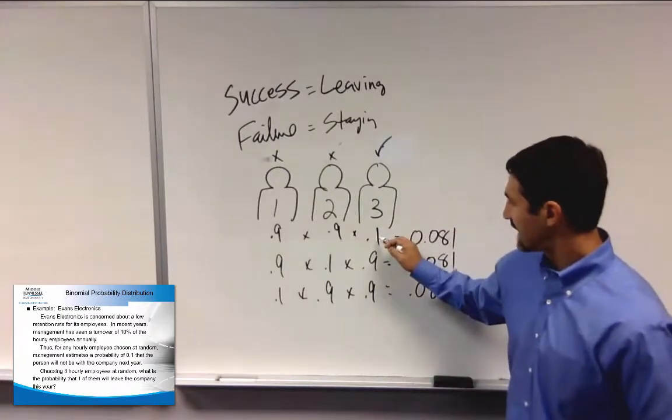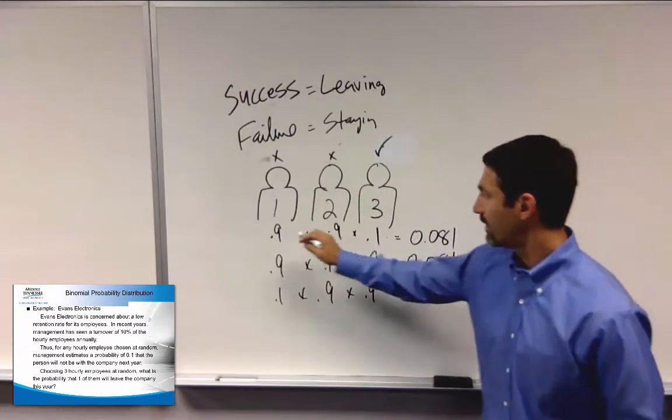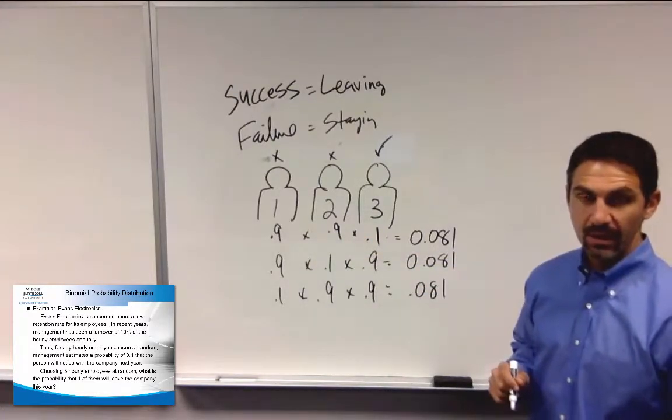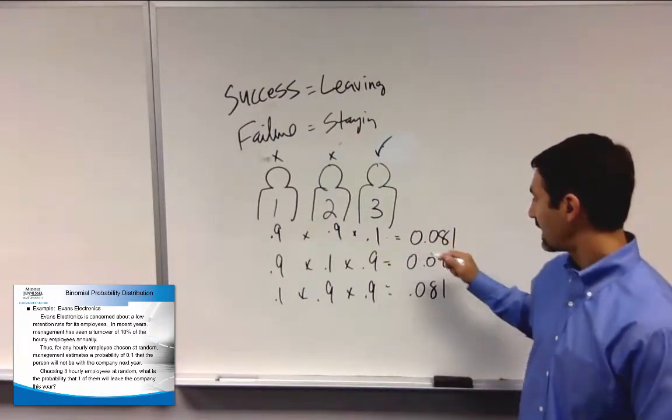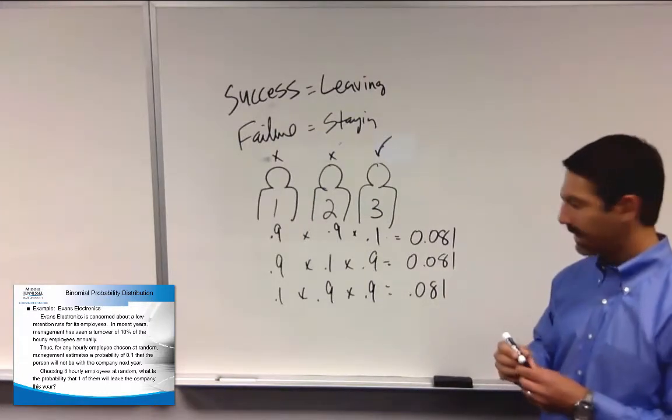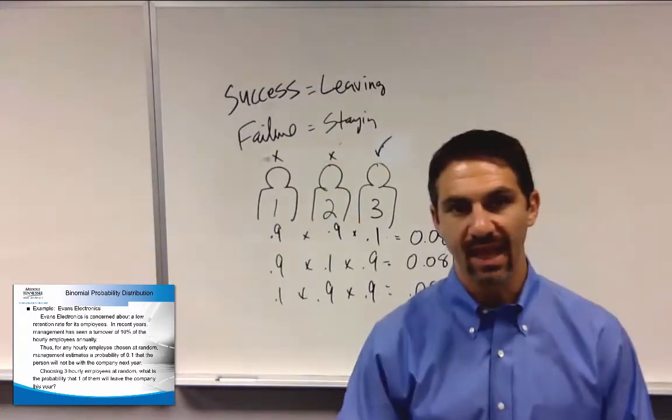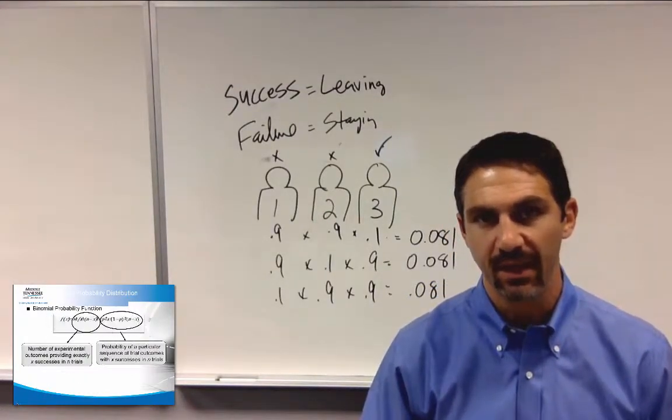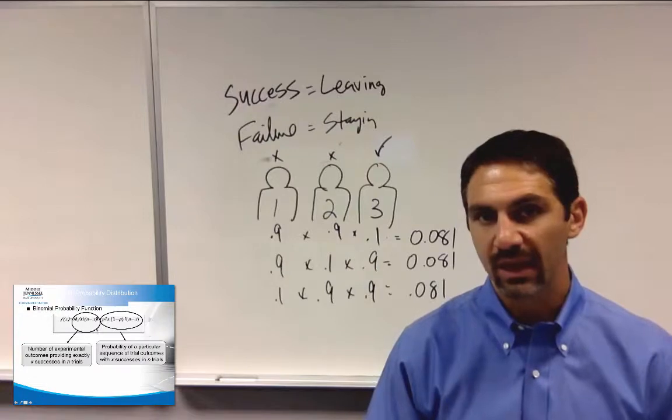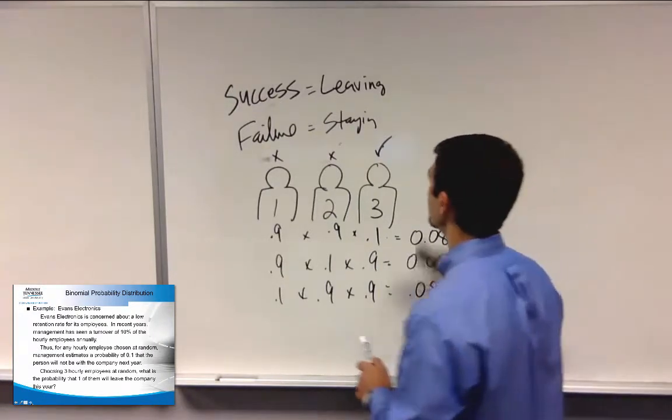So probability of success, only going to happen once. Probability of failure is going to happen twice. And the number of combinations of this happening is a total of three. Now I'm making a big deal out of this because that formula is quite intimidating when you look at it. But really, all it's referring to, let's draw it out as simple as possible here.